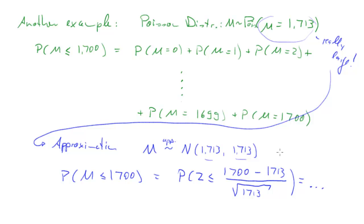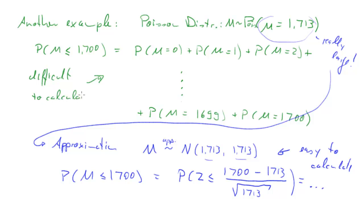In this case, the approximation is easy to calculate with your current knowledge, whereas the direct Poisson calculation is difficult. And as it turns out, both results would be very, very similar, so it's not too big a price to use the approximation. That's the point of the approximation — to make your life easier. But you need to know when it works: for large mu. What counts as a large mu? In the additional lecture notes you can see an illustration that illuminates this a bit more.